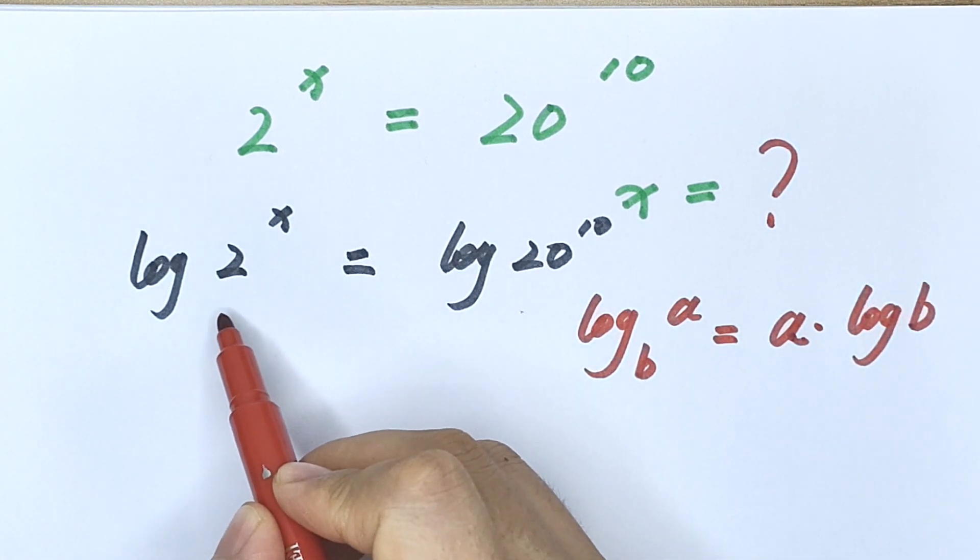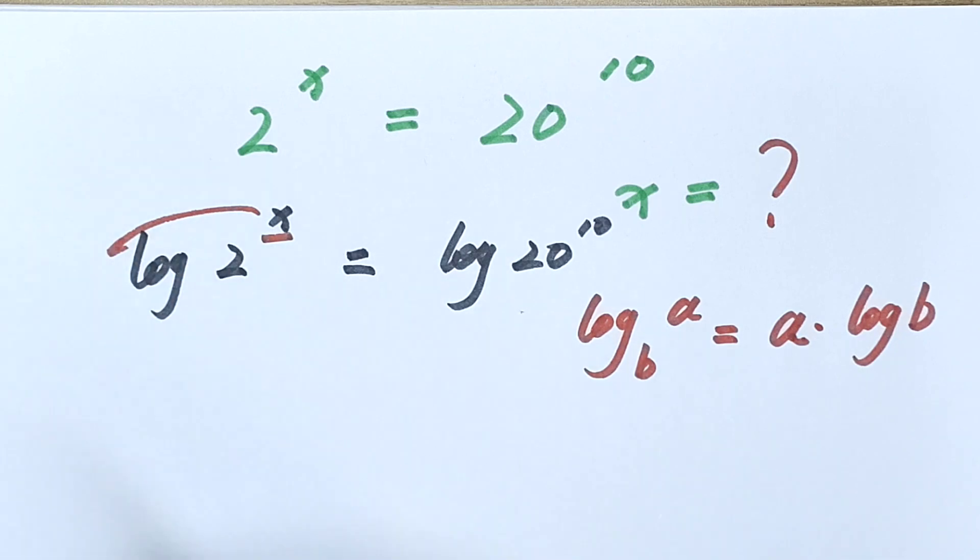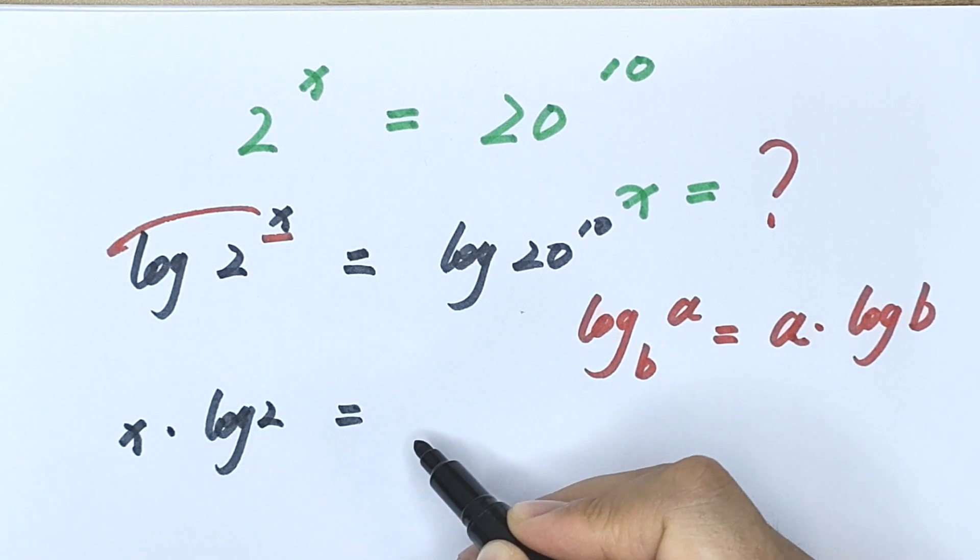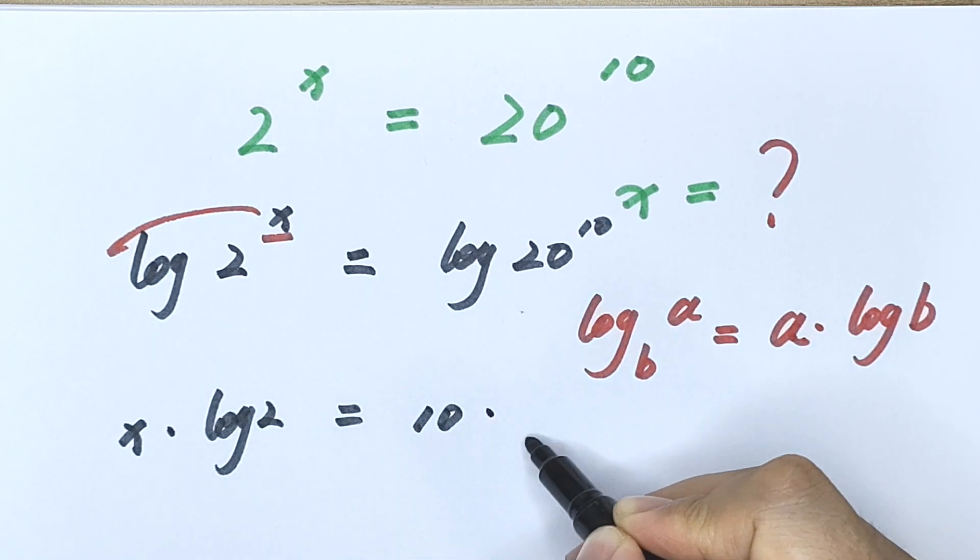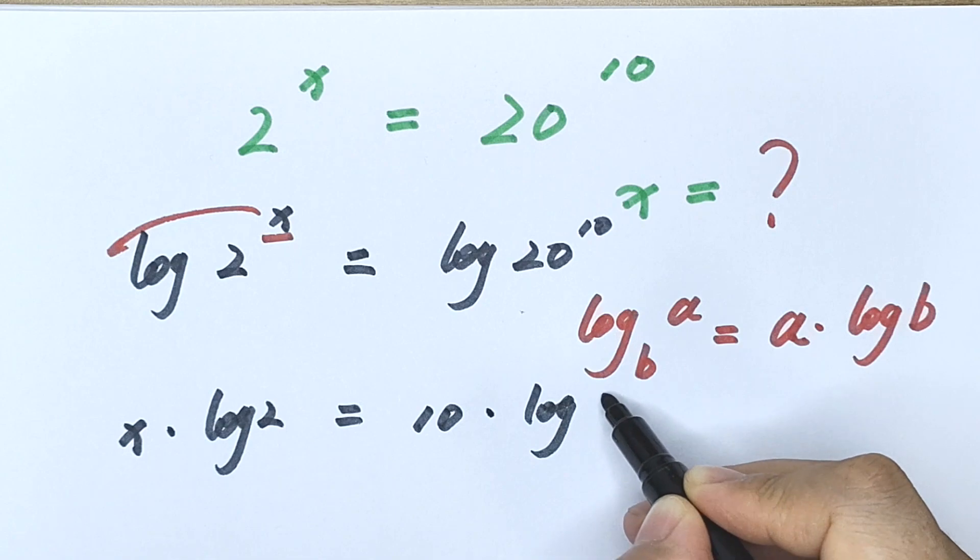So here we can move it to the front: x times log 2 equals 10 times log 20.